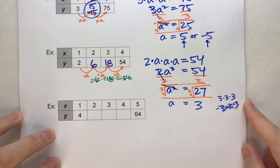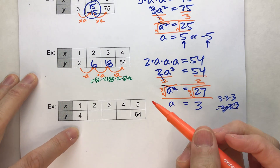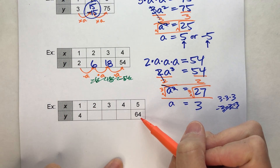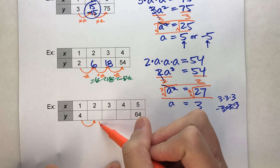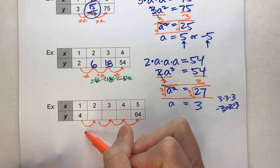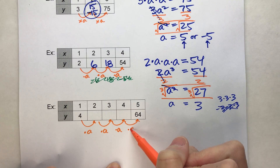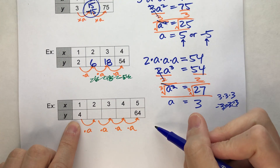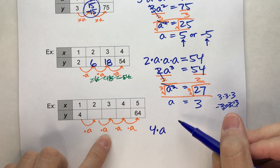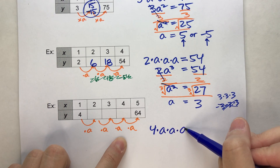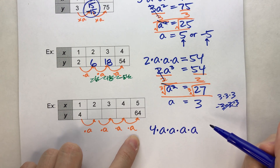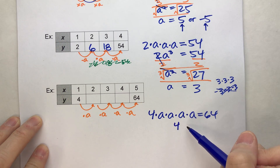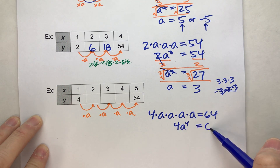Let's do one more — this one's a little harder because the terms are further apart. In this sequence, the first number is 4 and the fifth number is 64. We're repeatedly multiplying by the same amount — call it a — four times. So the equation is 4 times a times a times a times a, which is 4a to the fourth power equals 64.